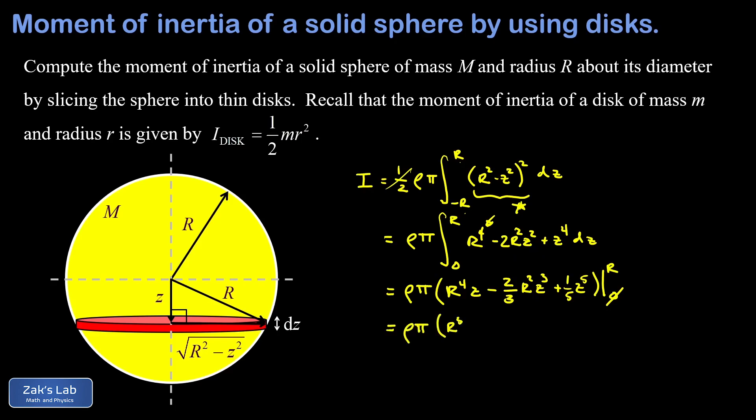So this gives me an r to the fifth for the first term minus two thirds r to the fifth for the second term plus one fifth r to the fifth for the third term. Now we can factor an r to the fifth out of that and I end up with rho pi r to the fifth.